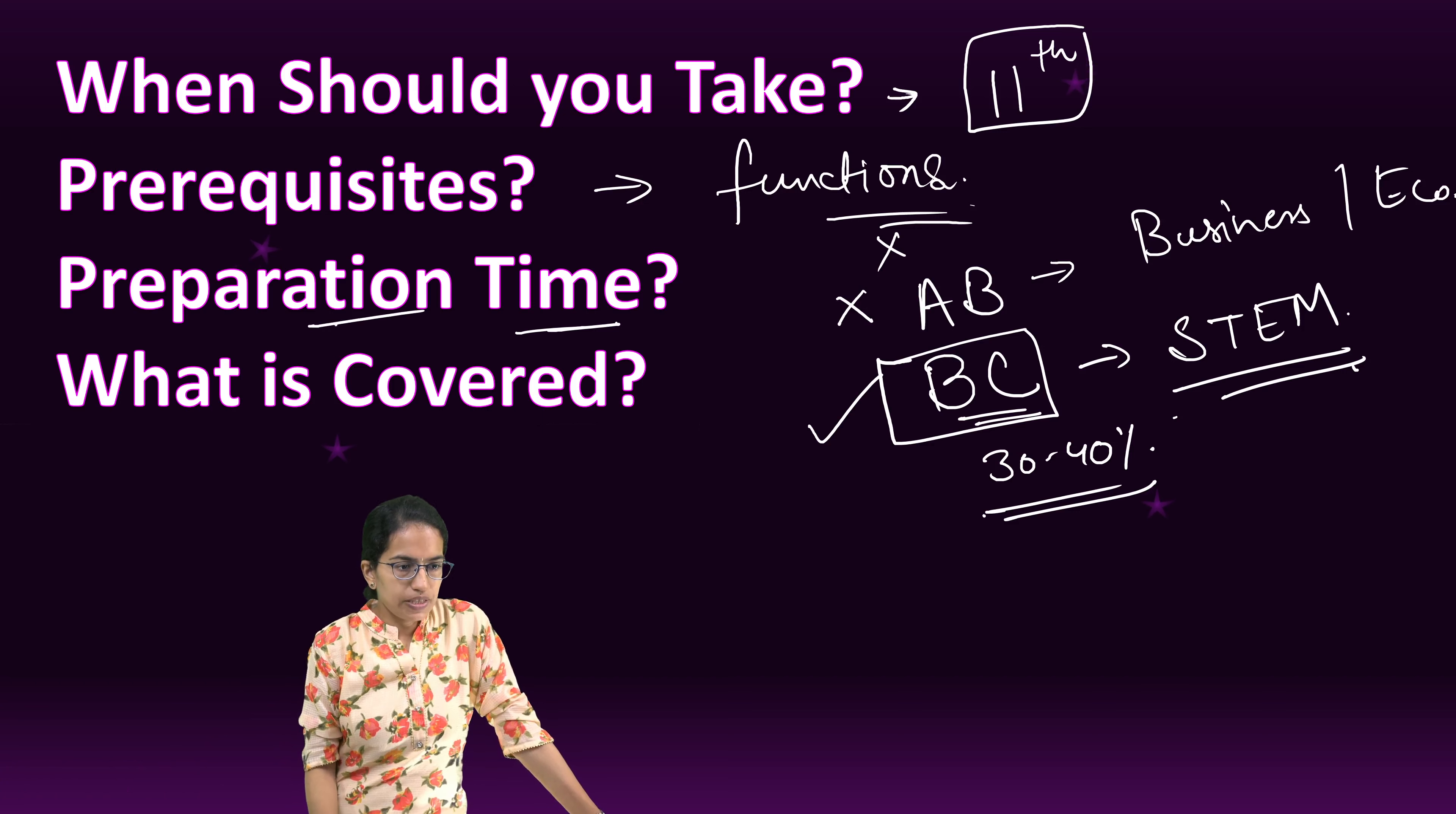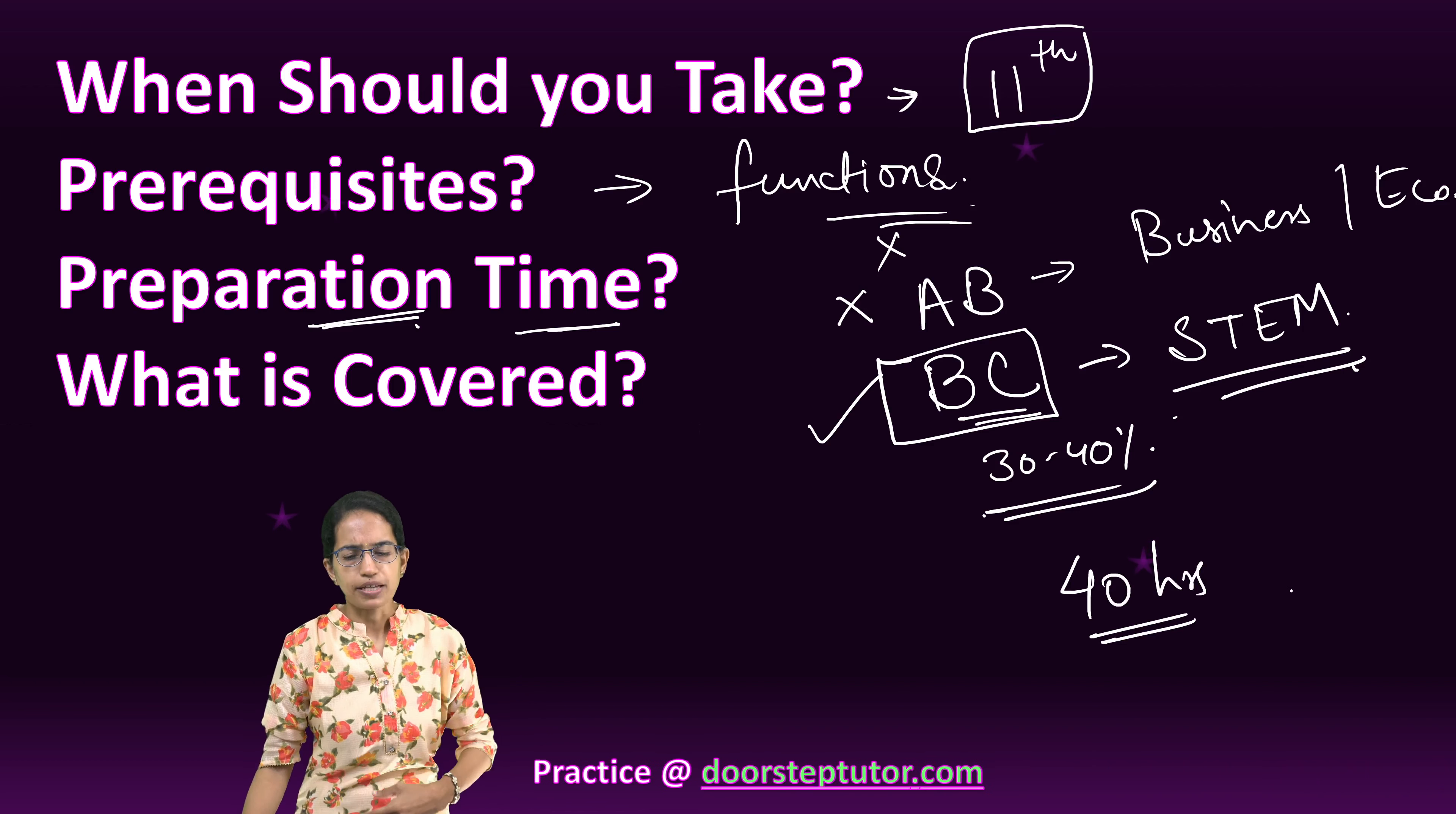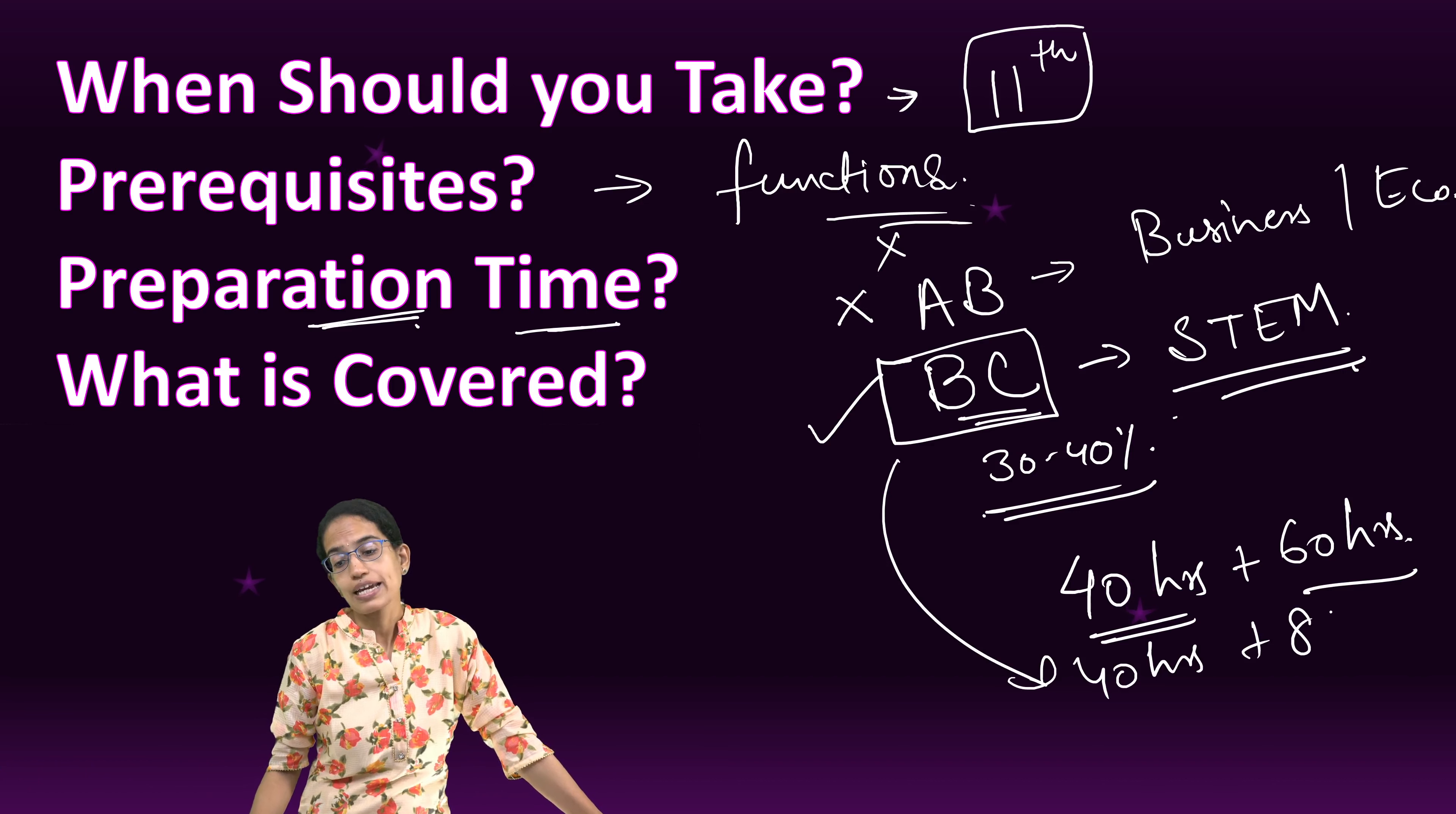Preparation time for AB is relatively less—you can say 40 hours of study material if you are going through the lectures or something, then it is around 40 hours of study material plus 60 hours of practice by yourself. For BC it is relatively 40 hours followed by 80 hours of practice sessions. That would actually suffice.